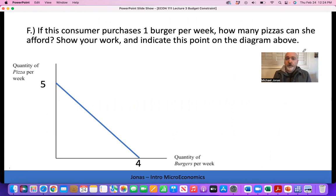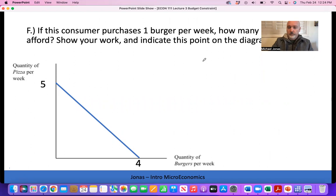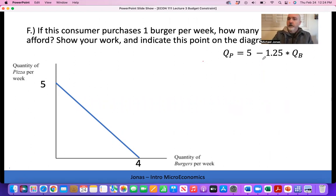Moving on. If this consumer purchases one burger per week, how many pizzas can she afford? Show your work, indicate the point on the diagram. Essentially, all we're doing is plugging in a value of 1 into our budget constraint equation. We can solve for the quantity of pizza we can afford for any given value of burgers. We plug in that value of 1, and we get 5 minus 1.25 times 1, which gives us 3.75.